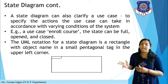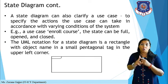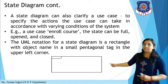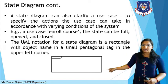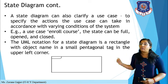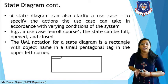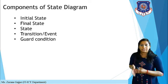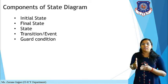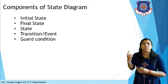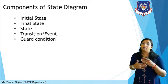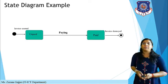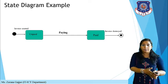The UML notation for a state diagram is a rectangle with the object name in a small pentagonal tag in the upper left corner. You can see in the image there is a rectangle with a pentagonal tag in the upper left corner. Now let's discuss the various components of a state diagram. A state diagram typically has five components: initial state, final state, actual states, transition or event, and a guard condition.